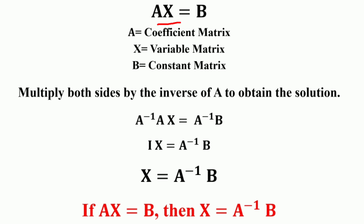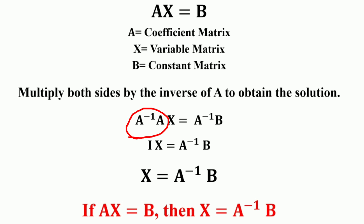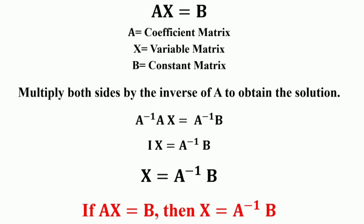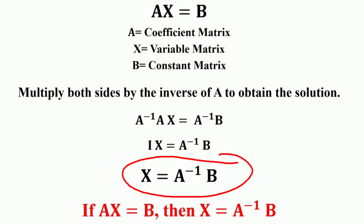Now to solve this equation for X, we would need to divide B by A in order to isolate the value of X. However, when operating with matrices we cannot divide. Instead, we multiply by using the inverse of A. So by multiplying both sides of the equation by the inverse of A, we obtain: A⁻¹ · A · X = A⁻¹ · B. Since A · A⁻¹ equals the identity matrix, and the identity matrix times X equals X, we get X = A⁻¹B.